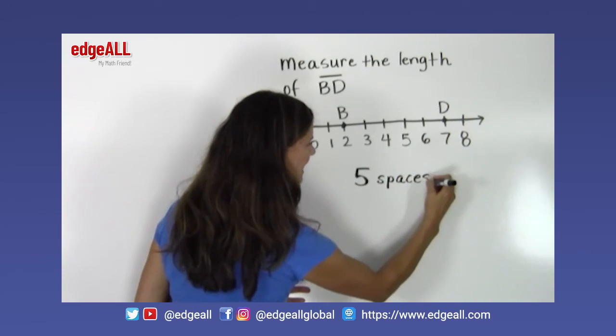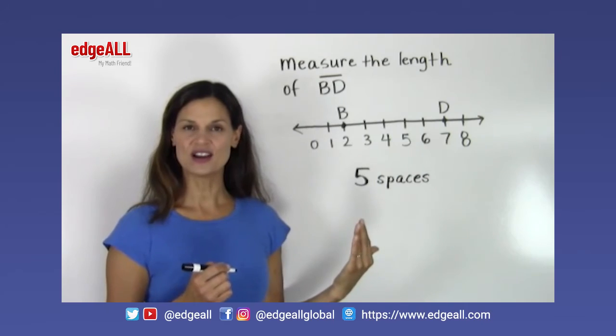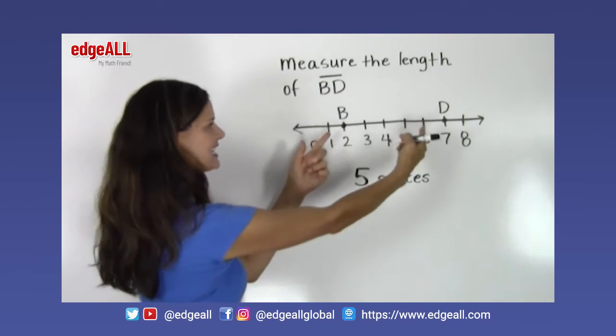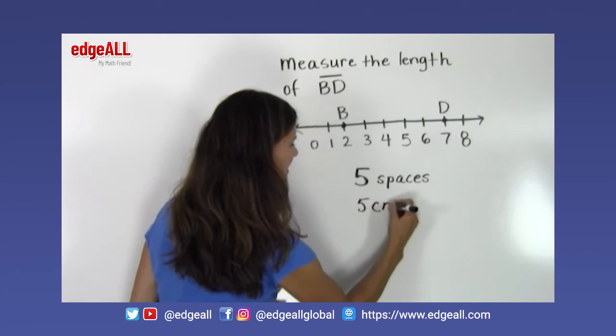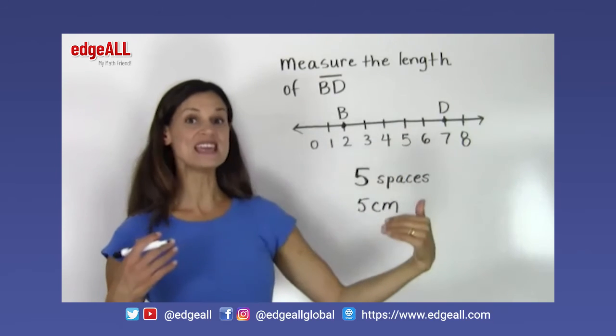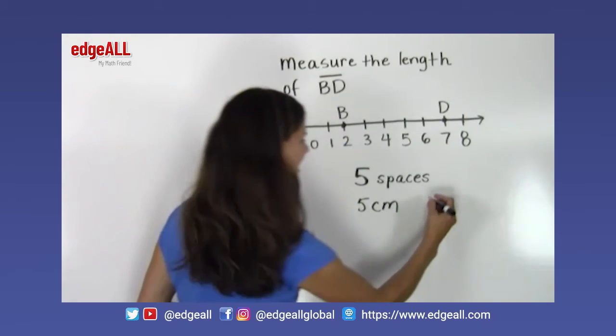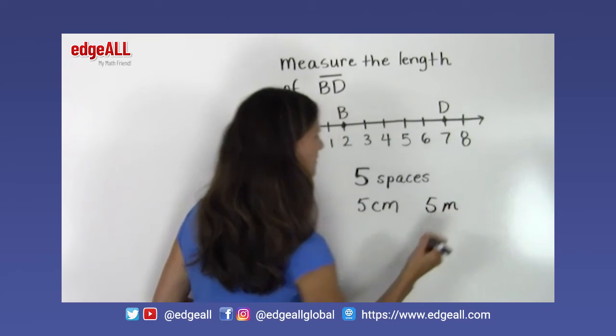Now if each space represents one centimeter, then we would say that the length of BD is five centimeters. If each unit or each space represents a meter, we would say in our answer that our measurement is five meters.